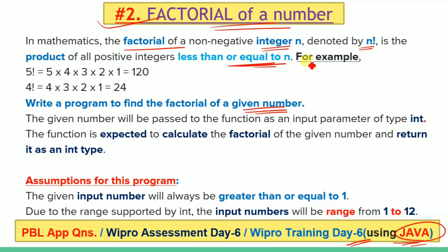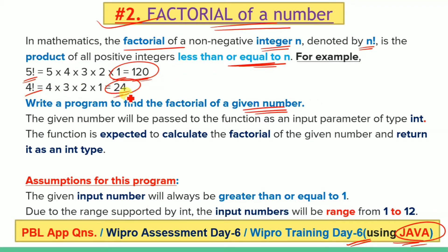For example, 5 factorial equals 5 × 4 × 3 × 2 × 1, which is equal to 120. Similarly, 4 factorial is equal to 24. The given number will be passed to the function as an input parameter of integer type.